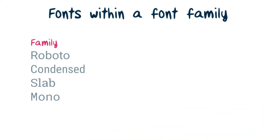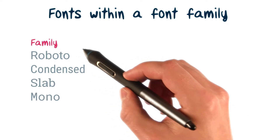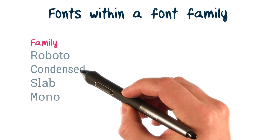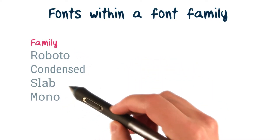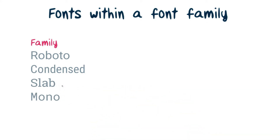What about all the different variations of fonts? A font family, or even a family of families, can contain dozens of variations. Roboto actually has four distinct font families, including a condensed, monospace, and even an older slab serif family.